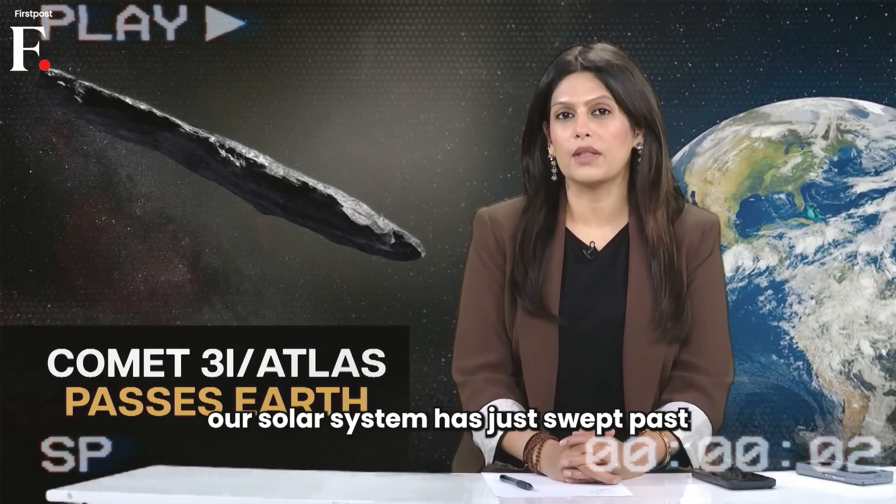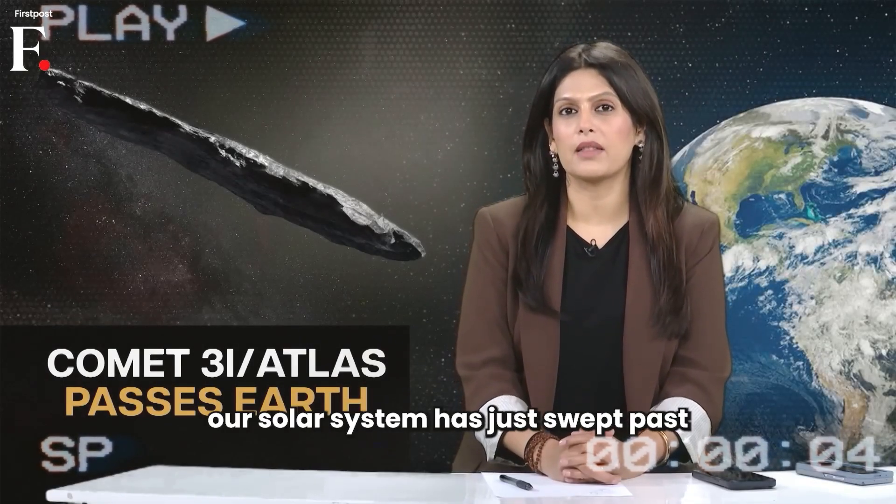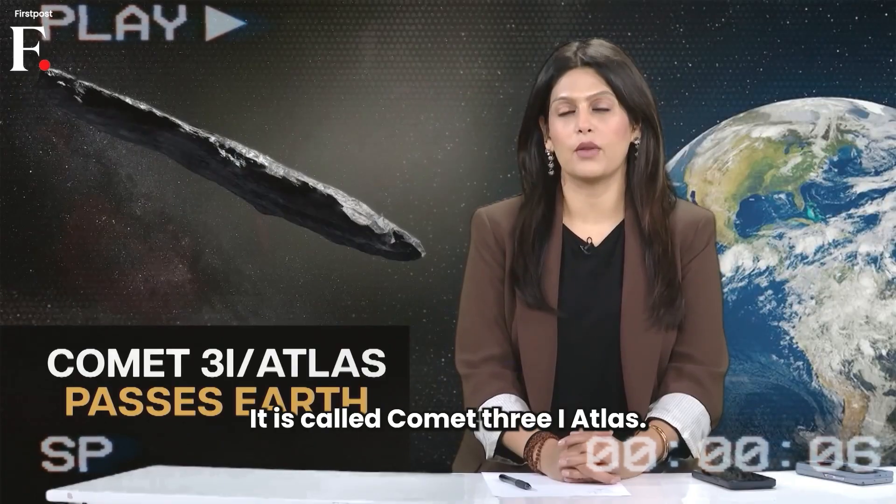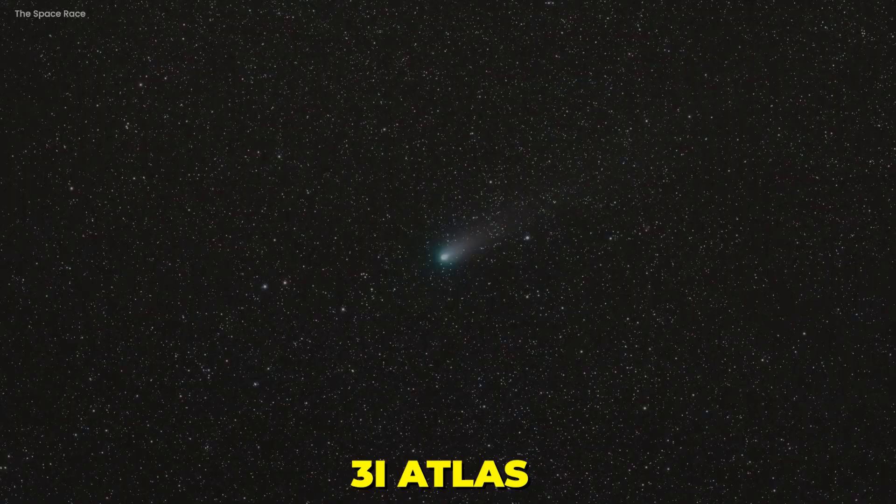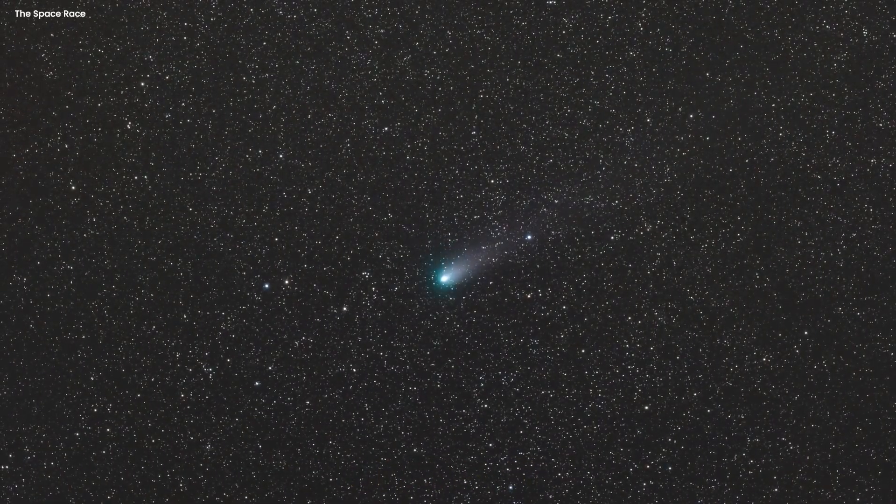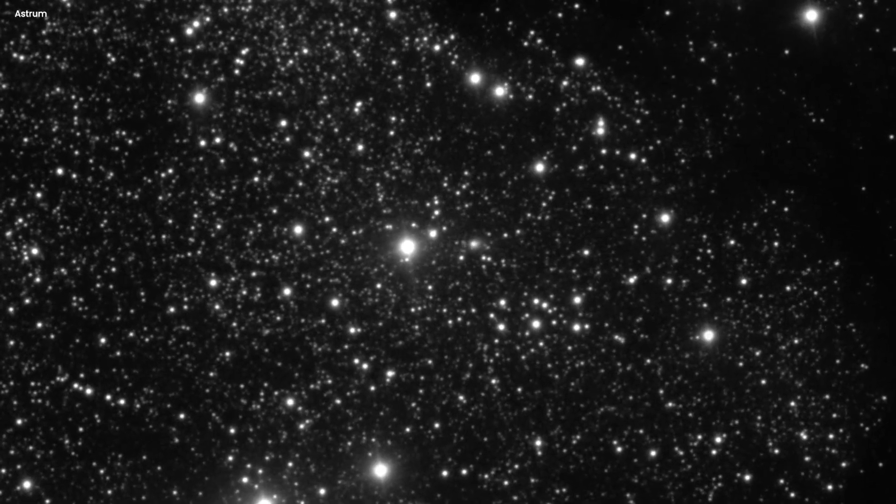A rare visitor from beyond our solar system has just swept past the Earth. It is called Comet 3I Atlas. 3I Atlas just flew past Earth and it didn't even notice us.